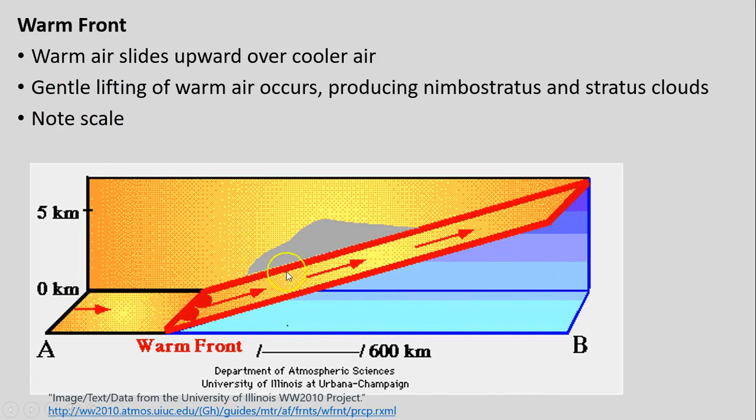This gentle lifting of that warm air produces those nimbostratus or stratus clouds that we saw in a prior video. Because that air is lifted more gently, it produces slower, lighter rain oftentimes—or precipitation could be snow if it's cold enough. The precipitation that is formed is relatively light in comparison to our cold front, where we have much more heavy precipitation.